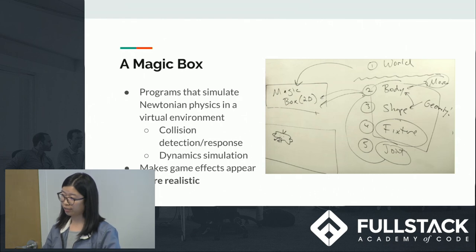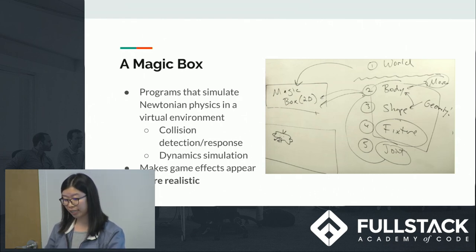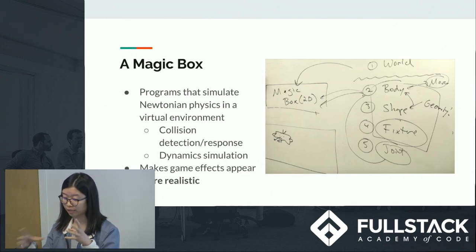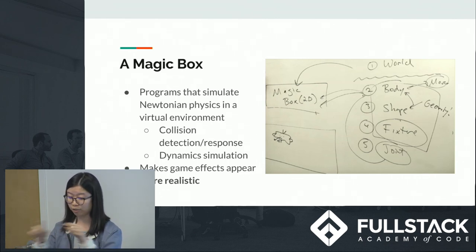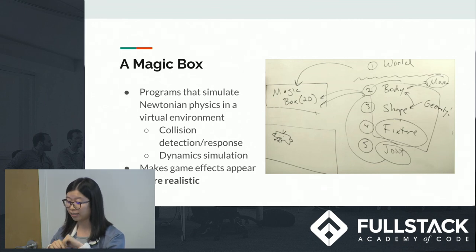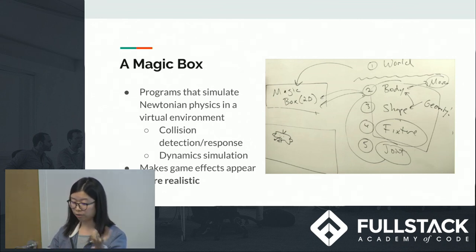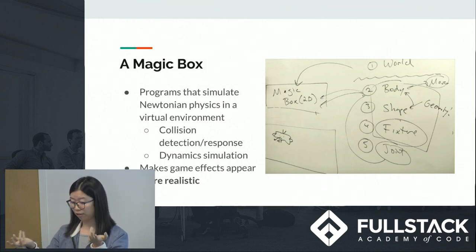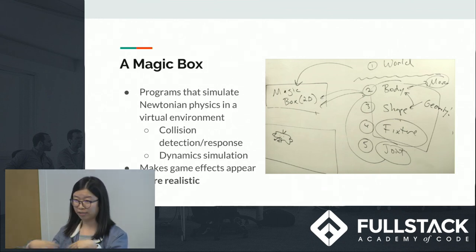Physics engines can be used in 2D and 3D games. When using a physics engine, a usual workflow involves setting up a bunch of objects, adding them to this magic box that we call the physics engine, and then asking the physics engine: where are the objects? Are they rotating? Are they moving? And if they are, then draw them out — render them for us in an animation.